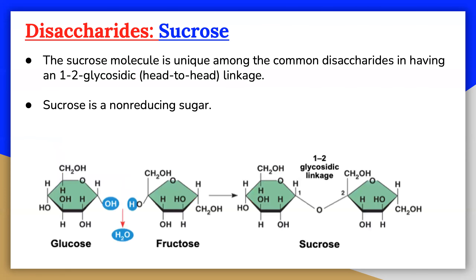Sucrose, on the other hand, is probably the largest selling pure organic compound in the world. It is also known as table sugar. Most of the sucrose sold commercially is obtained from sugarcane and sugar beets by evaporation of the water and recrystallization. The sucrose molecule is unique among the common disaccharides in having an alpha-1,2 glycosidic linkage. This linkage gives sucrose certain characteristics that are quite different from those of maltose and lactose.